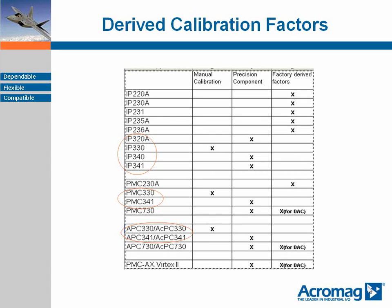Boards numbered in the 300s are analog input boards. They are all designed with an on-board circuit which creates a reference voltage level predefined in the manual depending on the gain and voltage range. This voltage can be read at any time in the user's system and becomes an essential factor in the calibration equations referenced in a previous slide.